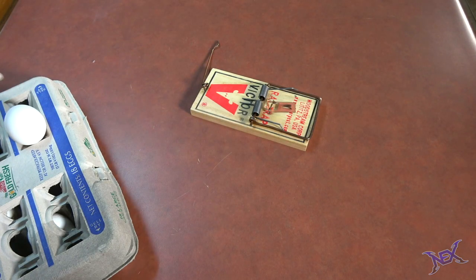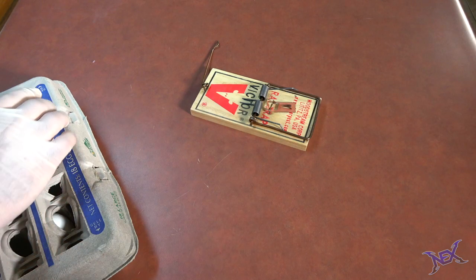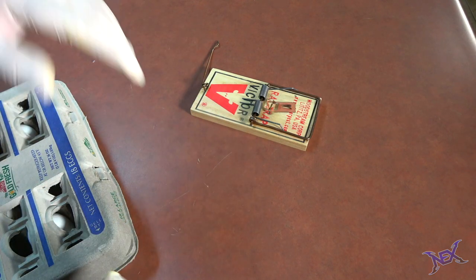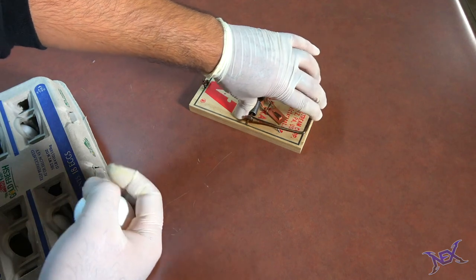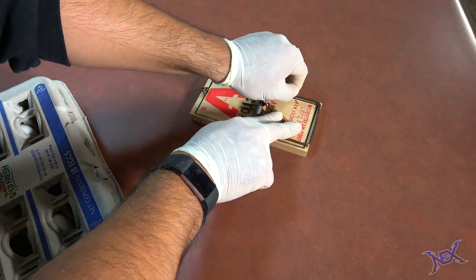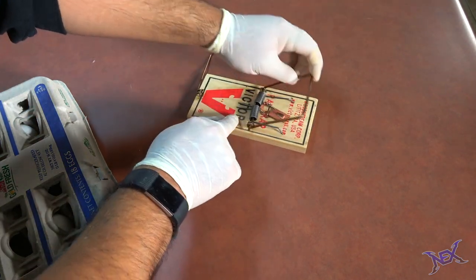So how we're gonna set up a prank on one of your friends is we're gonna take an egg and we're gonna glue it on the side where the snapper usually hits. So in order to work better, we're gonna deactivate the spring.